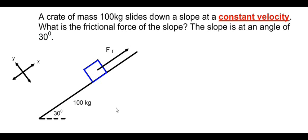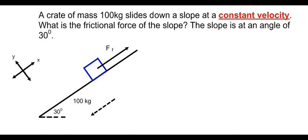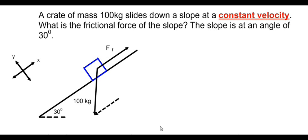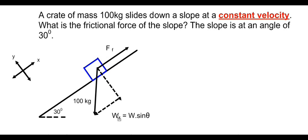The reason the box slides down the slope is because of the parallel component of weight. If we have the weight of an object acting downwards, there will be a parallel component of weight acting along the slope and a perpendicular component of weight acting perpendicular to the plane. The x-component of weight is w sine theta.